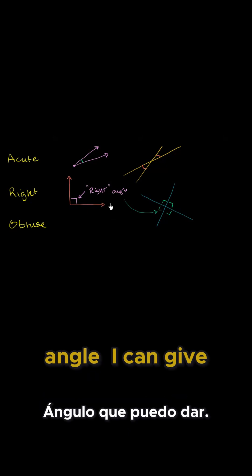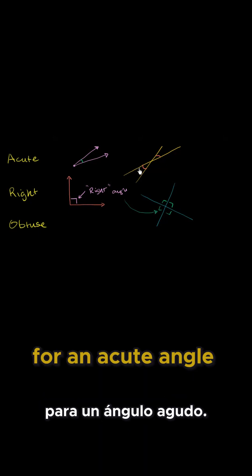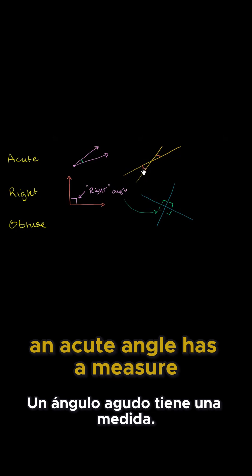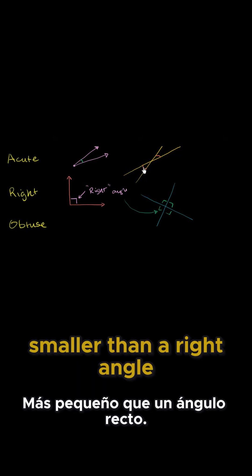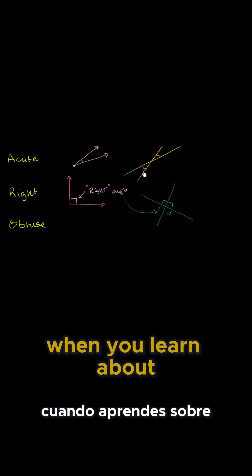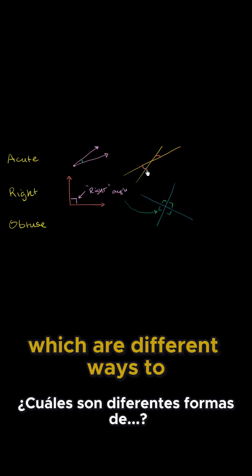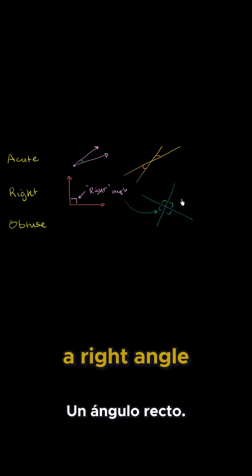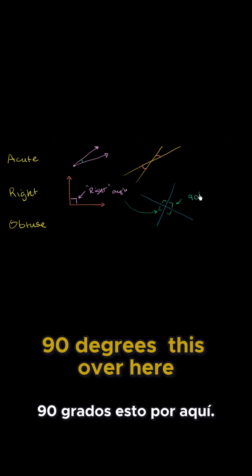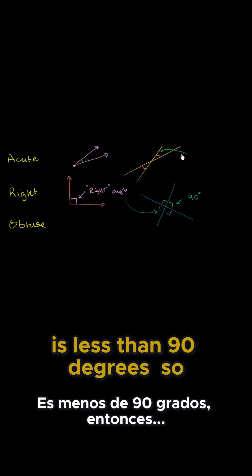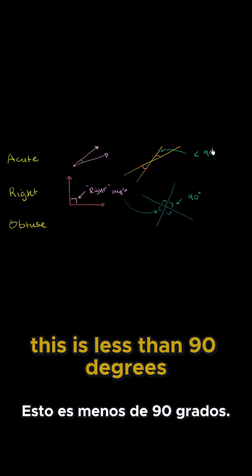And now that we've defined right angle, I can give you another definition for an acute angle. An acute angle has a measure, or it's smaller than a right angle. When you learn about radians and degrees, which are different ways to measure angles, you'll see that a right angle can be measured as 90 degrees. This over here is less than 90 degrees.